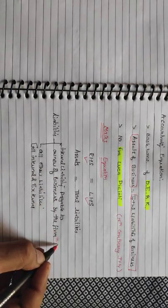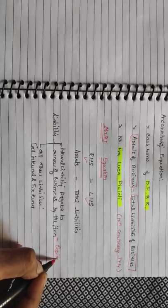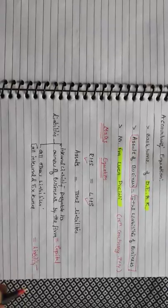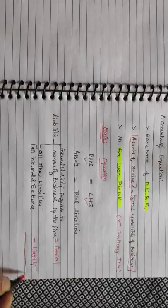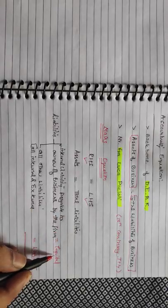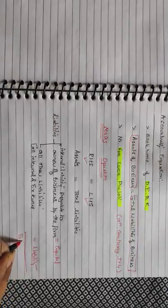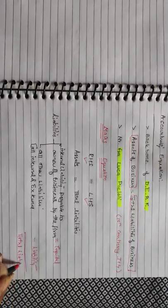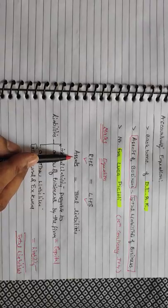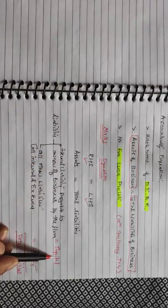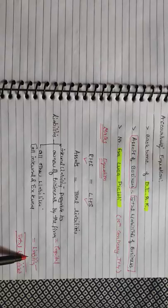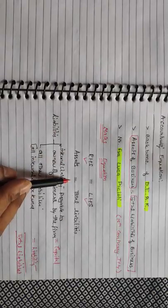In double entry bookkeeping, internal liabilities are known as Capital and other liabilities are known as Liabilities. When we consolidate capital and liabilities together, we call it Total Liabilities. So every business acquires its assets either from capital or from liabilities — that's why Assets = Total Liabilities.